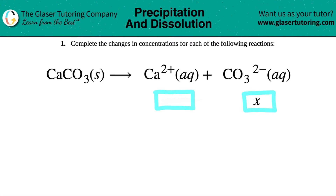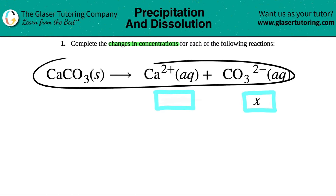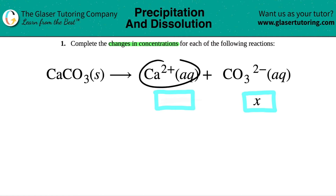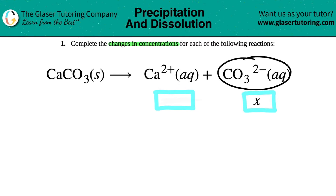Number one: complete the changes in concentrations for each of the following reactions. We have calcium carbonate, CaCO₃, which is a solid, and it will break down — yield — into the calcium ion Ca²⁺ aqueous, plus the carbonate ion CO₃²⁻.